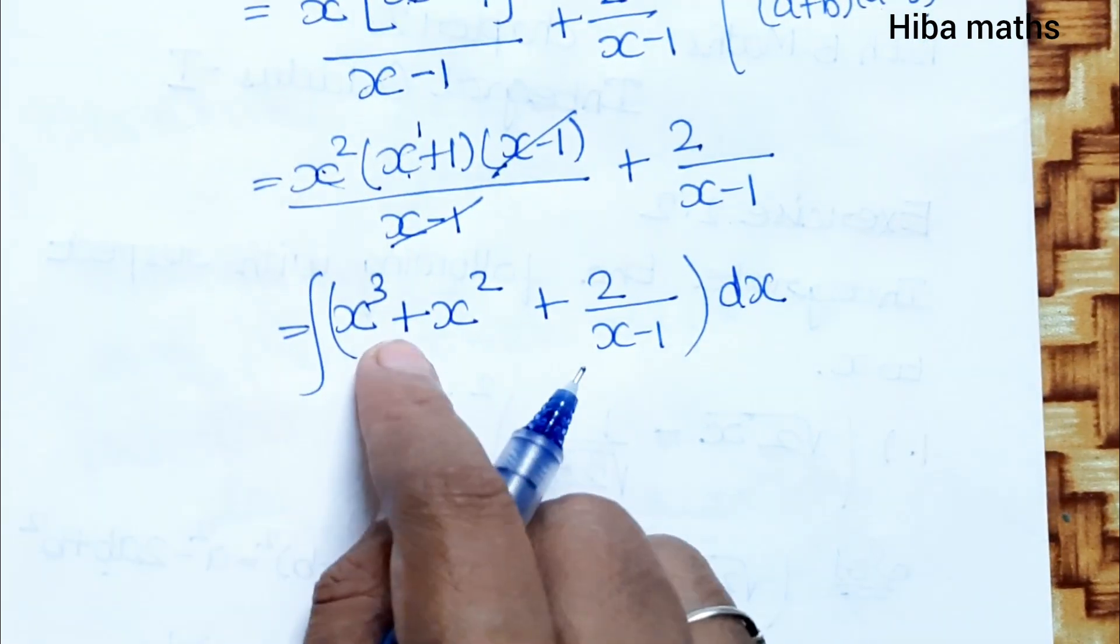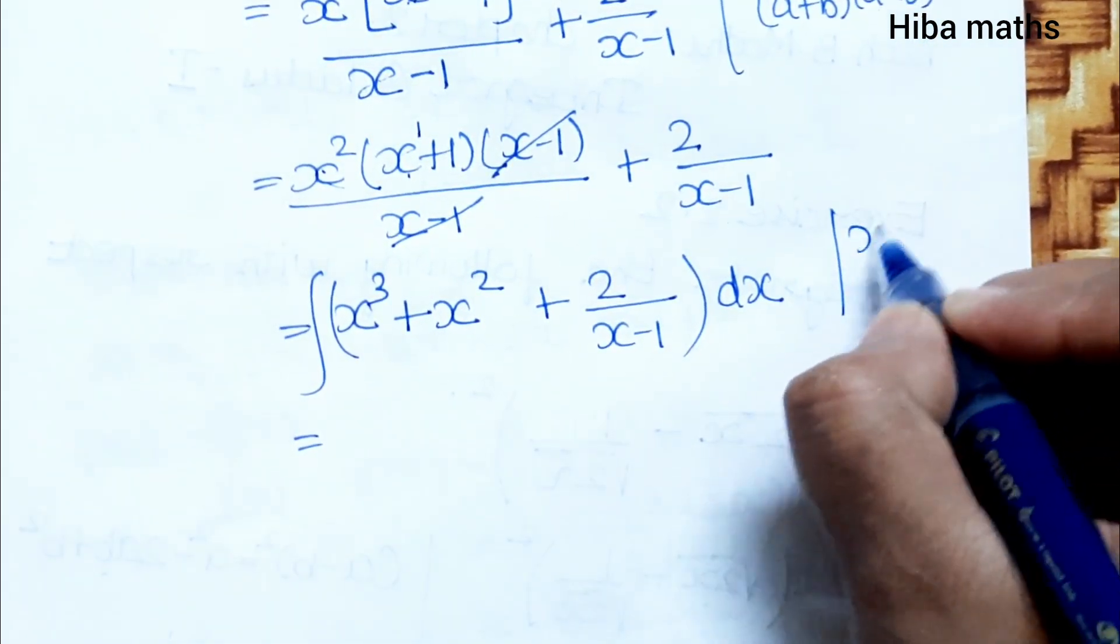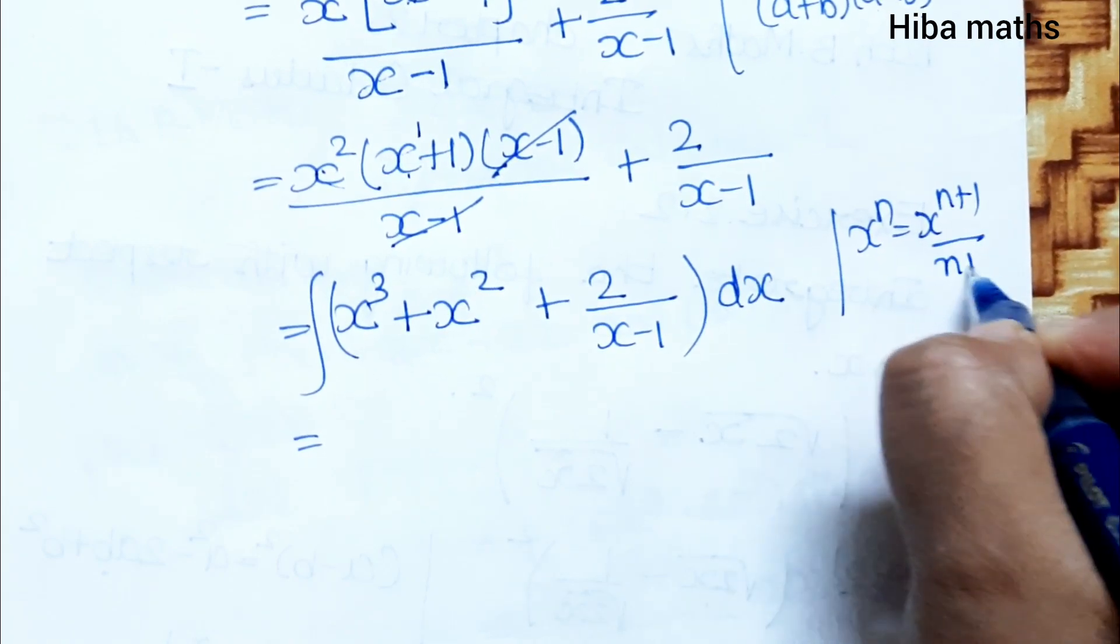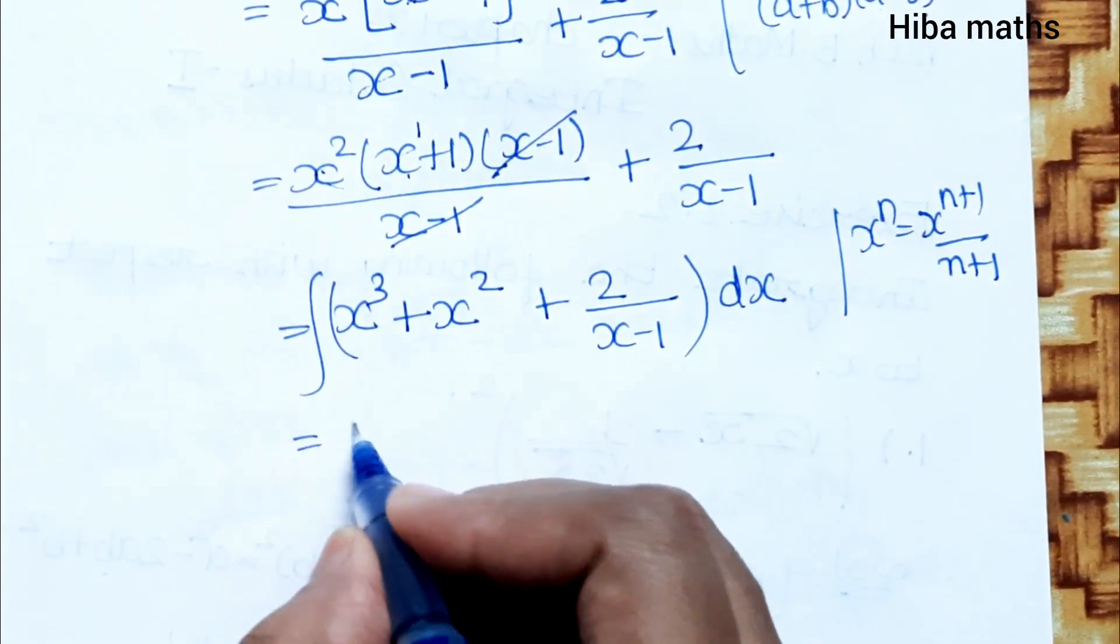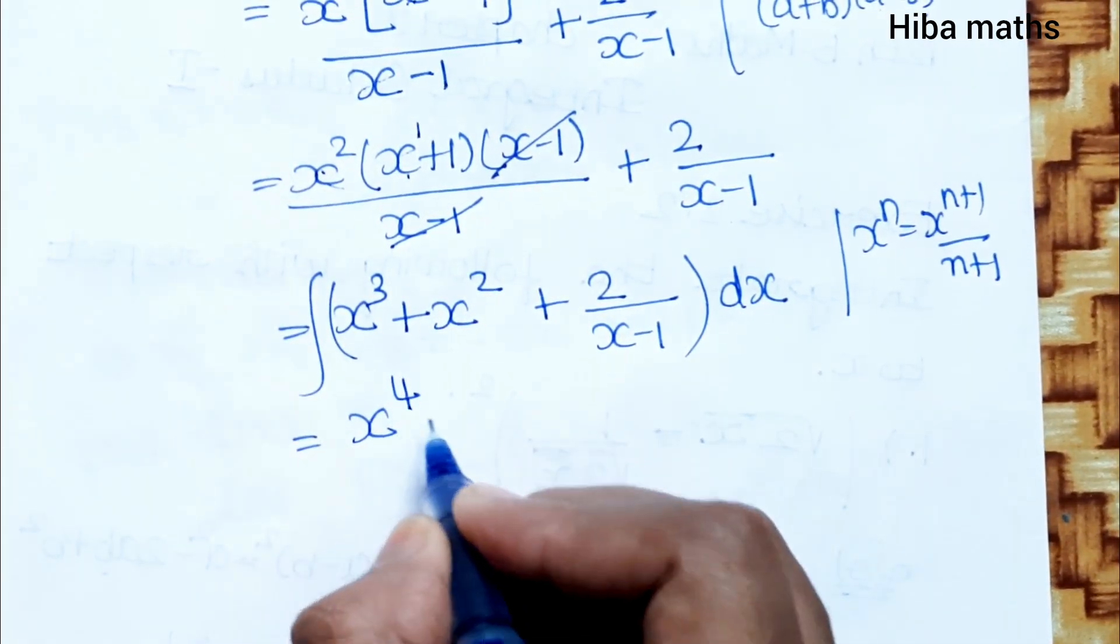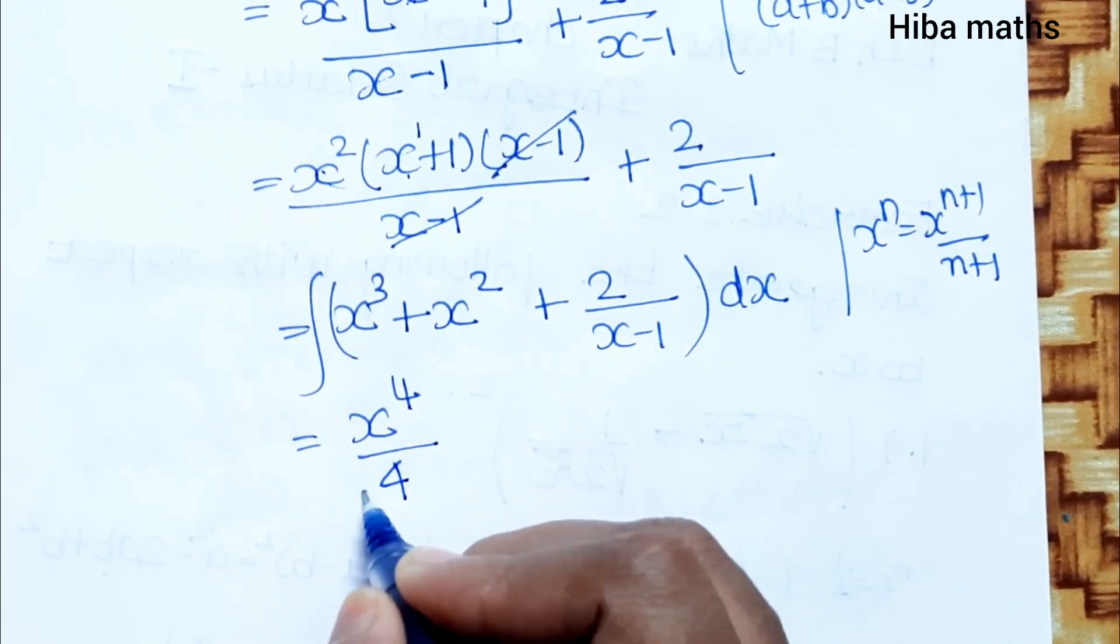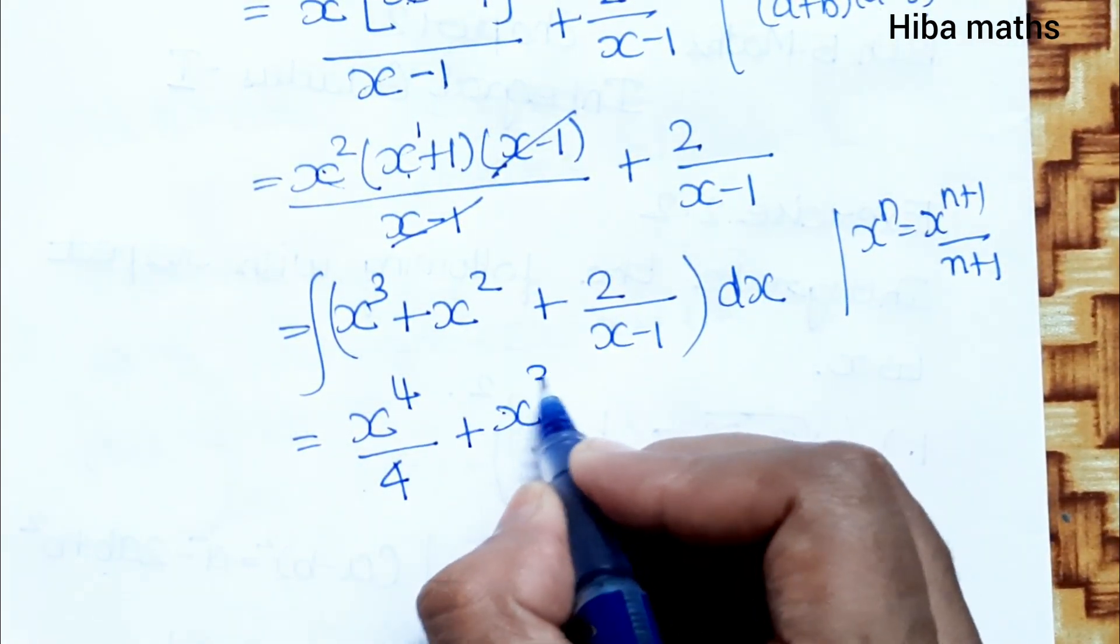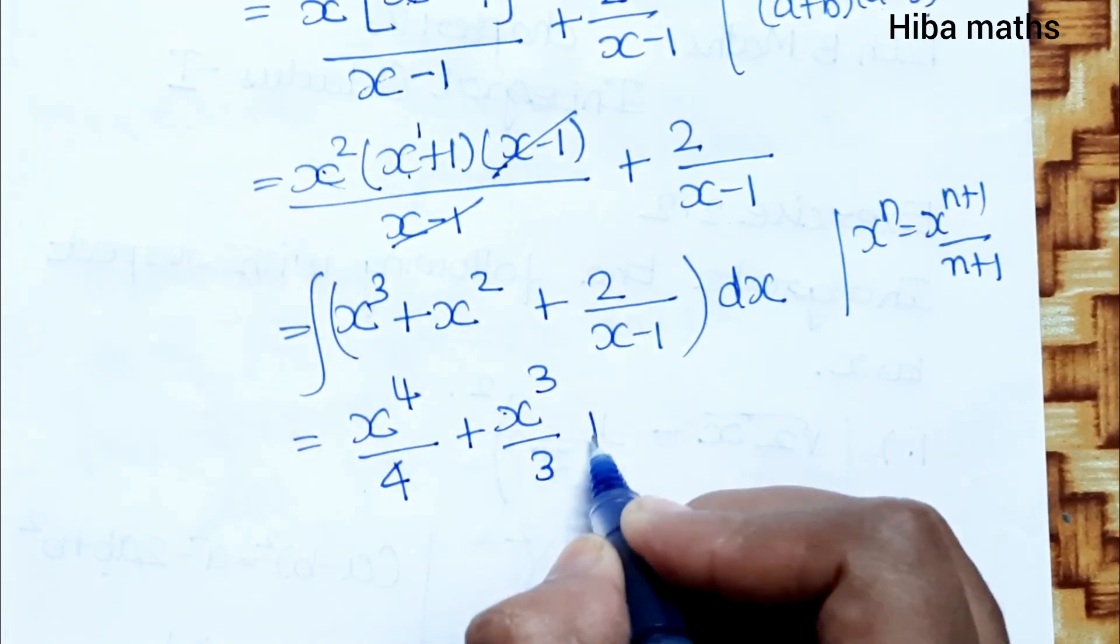For x^n, the integral is x^(n+1)/(n+1). So x^3 becomes x^(3+1)/4, which is x^4/4. Plus x^2 becomes x^(2+1)/3, which is x^3/3. Plus the integral of 2/(x - 1).